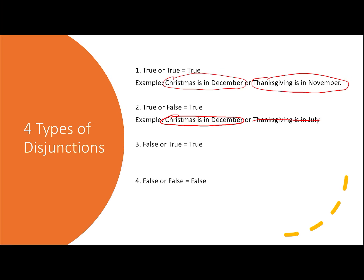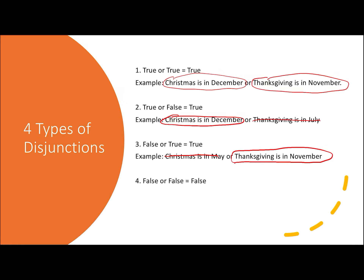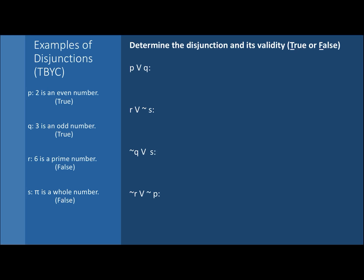We could have a false statement or a true statement, such as 'Christmas is in May or Thanksgiving is in November.' Since the second statement is true, the entire disjunction is true. The only case where a disjunction is false is false or false — for example, 'Christmas is in May or Thanksgiving is in July' — both individual statements are false, so the entire statement is false.